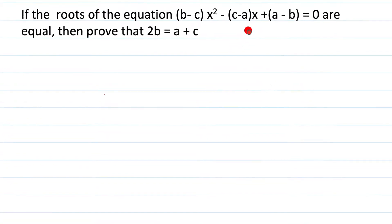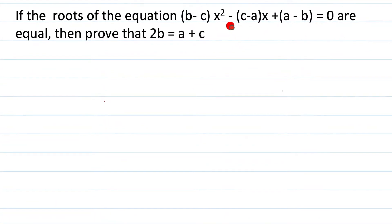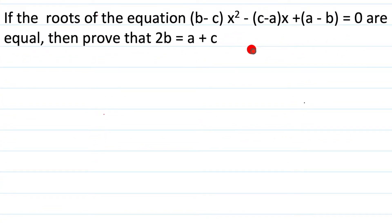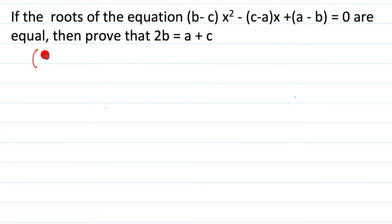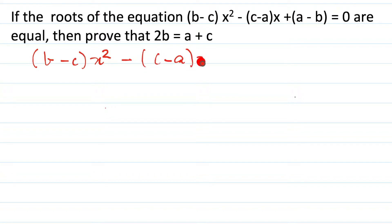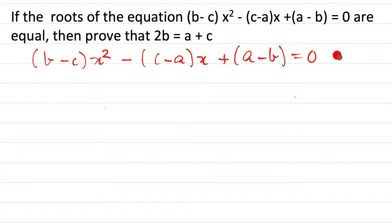This is one of the questions which is a doubt for middle students. So let us see how we solve this. Let us first write it down. We'll have (b minus c) into x squared minus (c minus a) into x plus (a minus b) and that's equal to 0.